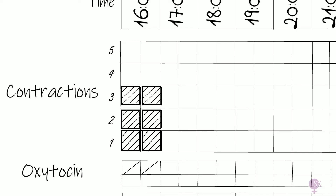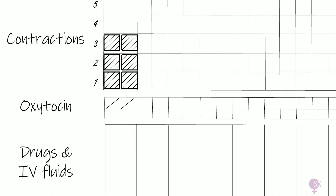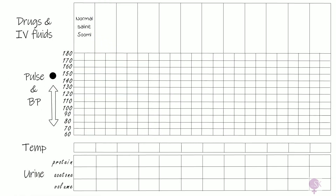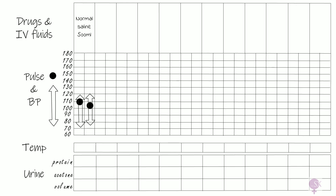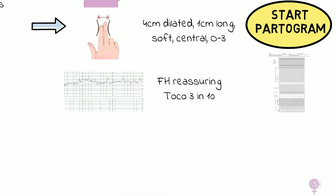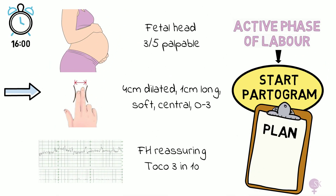We haven't administered any oxytocin yet. We've given her normal saline, and we indicate the maternal parameters including heart rate, blood pressure, temperature, and urine parameters. The plan at this point is to discuss pain relief — Ms Brown opts for an epidural — and then reassess in 4 hours.